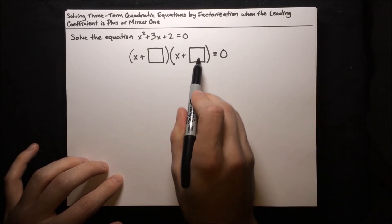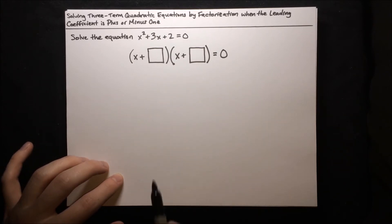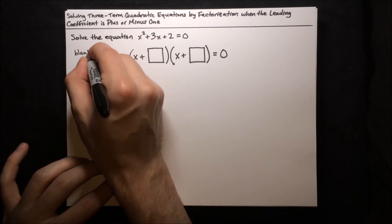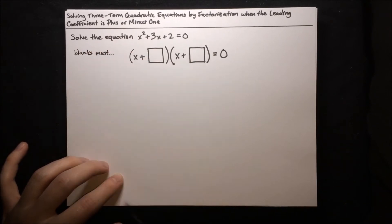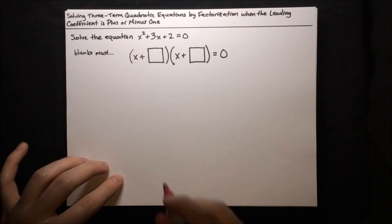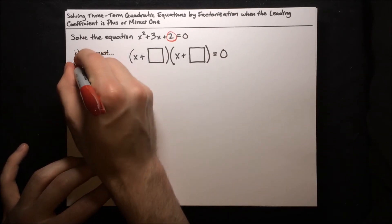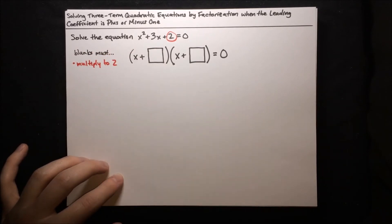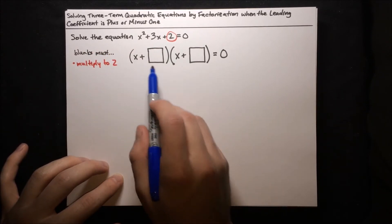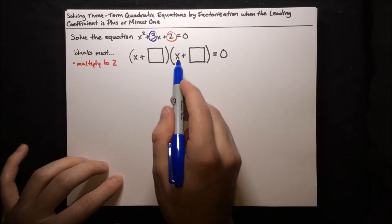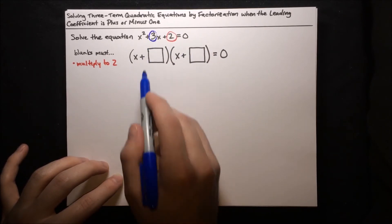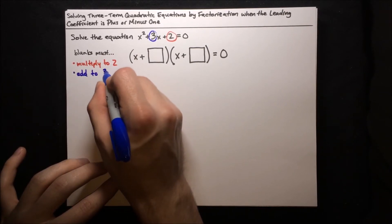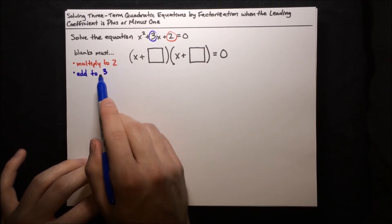We need to fill in the blanks. There are two conditions: first, the blanks must multiply to the constant — they must multiply to 2. And second, they must add to 3, because each one is multiplying an x, and those get added to form that 3x. So the blanks must multiply to 2 and add to 3.